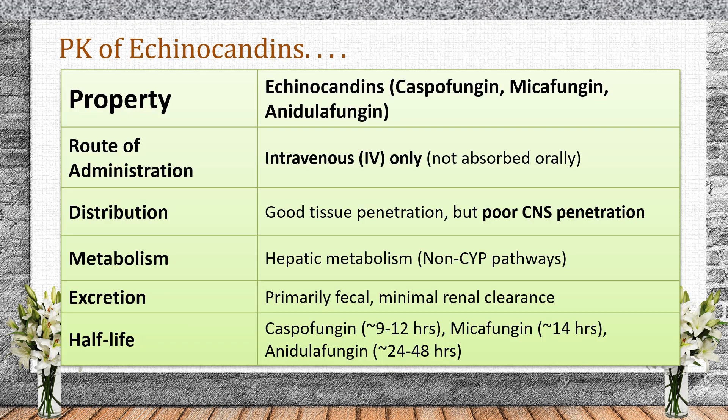Key pharmacokinetic points of echinocandins: they are only available as IV formulations because they are not absorbed orally, limiting their use to hospital settings. They have good tissue penetration for systemic candida and aspergillus infections, but poor CNS penetration, meaning they are not useful for fungal meningitis. Hepatic metabolism occurs via non-CYP pathways, resulting in fewer drug interactions compared to azoles. Caspofungin undergoes some hydrolysis and is affected by liver dysfunction. They are primarily excreted through feces with minimal renal clearance, so no renal dose adjustments are needed.